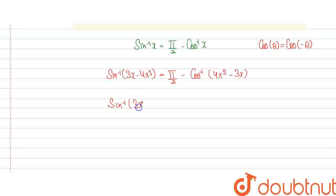So we will get sin⁻¹(3x - 4x³) which is equal to π/2 - cos⁻¹(-(3x - 4x³)). Now you can see that these two angles are equal. Using this property, we can write π/2 - cos⁻¹(x) as sin⁻¹(x).